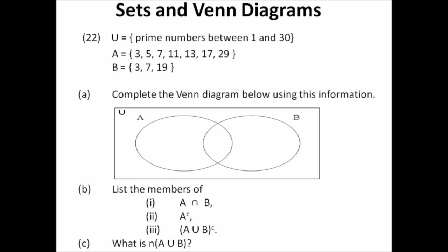Number twenty-two: sets and Venn diagrams. The universal set is prime numbers between 1 and 30. Set A is {3, 5, 7, 11, 13, 17, 29} and set B is {3, 7, 19} — some members have been left out. Complete the Venn diagram using this information. Then list the members of A intersection B, and work out the other set operations indicated. Know what each symbol stands for.